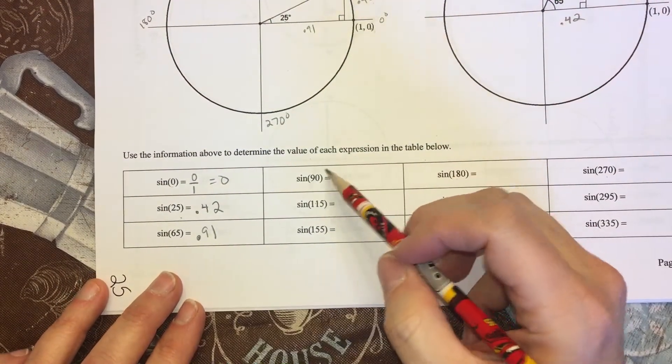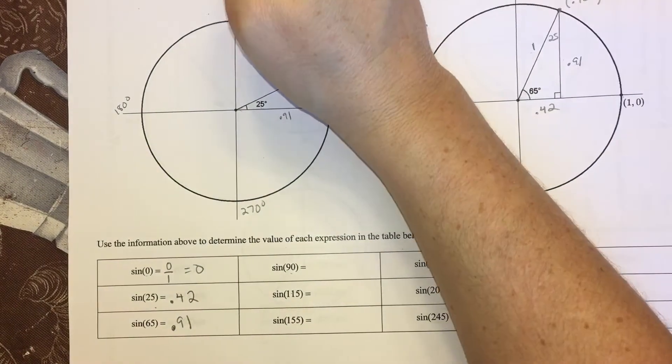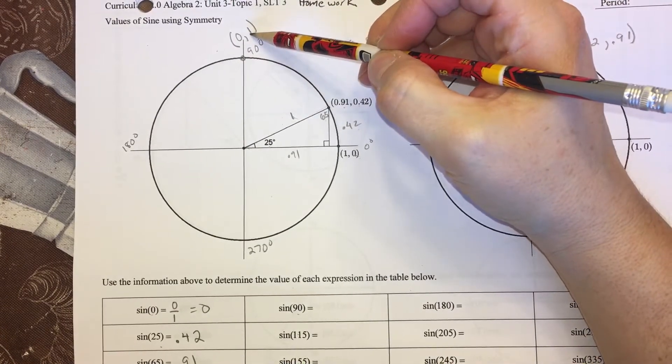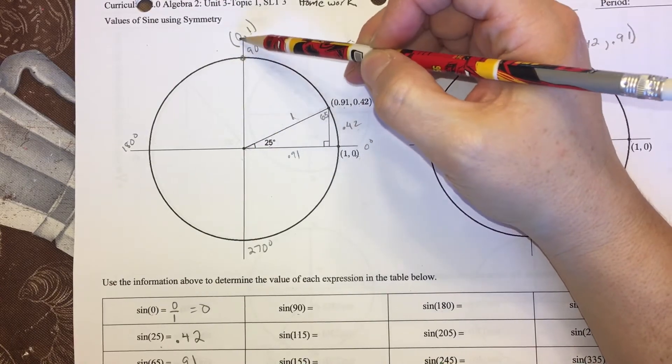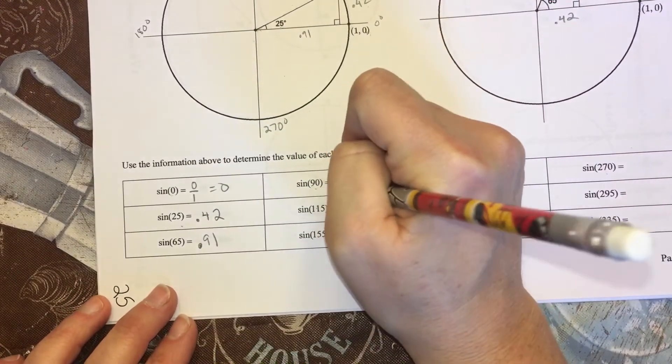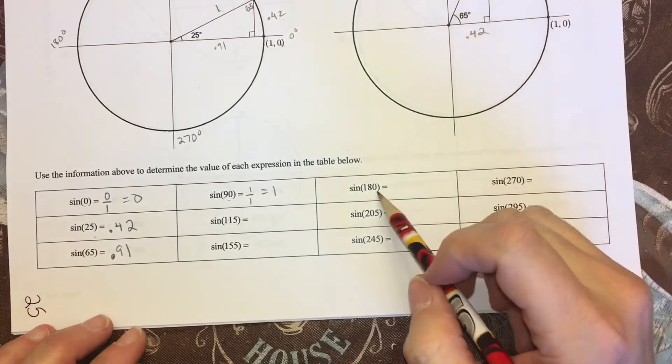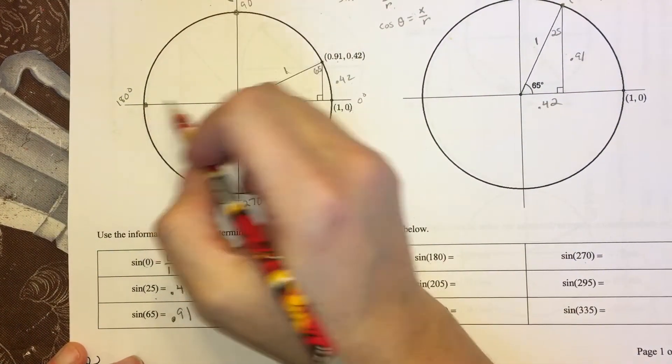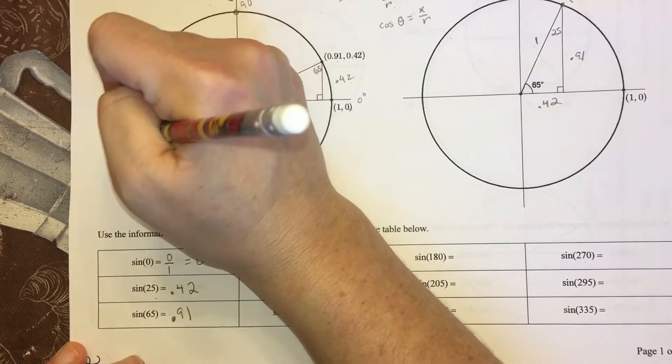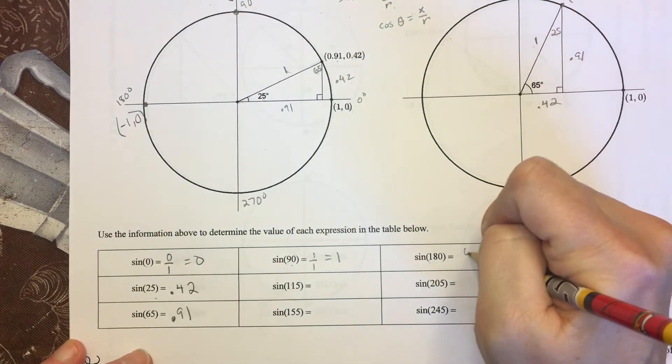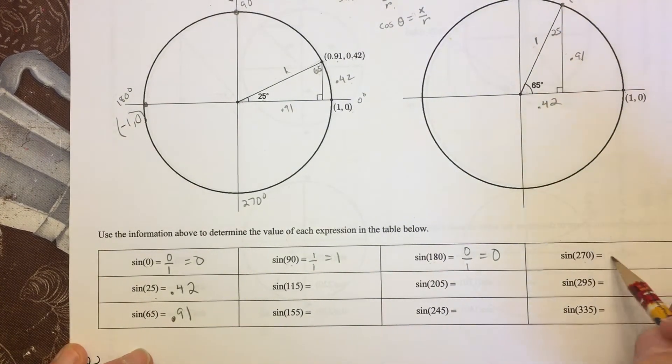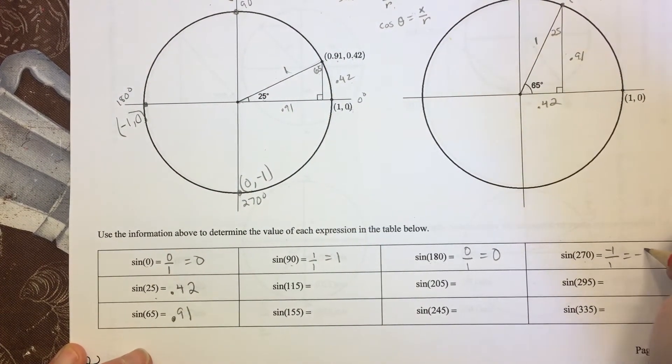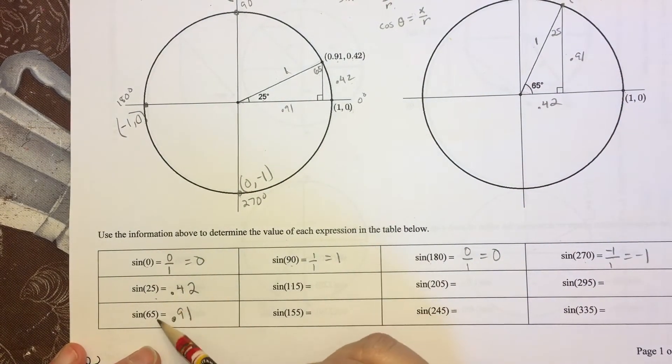At 90 degrees, I have the point—again my radius is 1. I'm going right and left 0 and up 1, so y over r is 1 divided by 1, which is just 1. So we'll just finish up these quadrantals. Sine of 180—if I look here I've got (-1, 0), so y over r will be 0 over 1. And then for 270 down here it's (0, -1), and y over r is just -1.